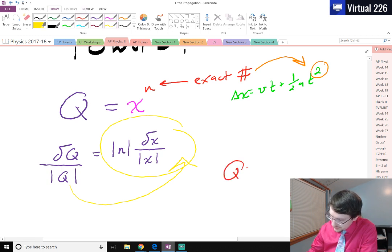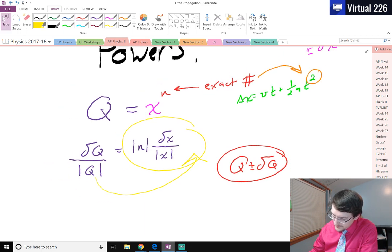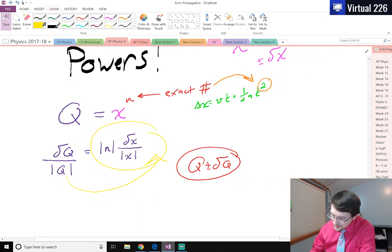So if we do this, we'll get q plus or minus some del q, and we could just walk away from that. Powers are actually pretty quick and easy. Nothing crazy there.